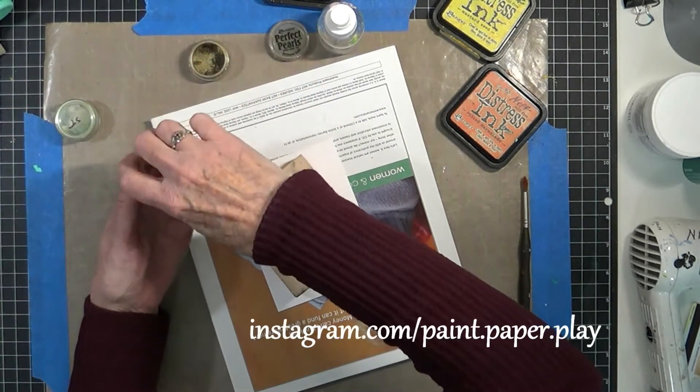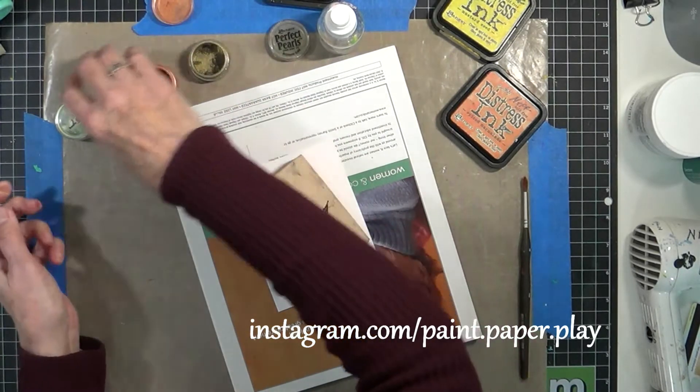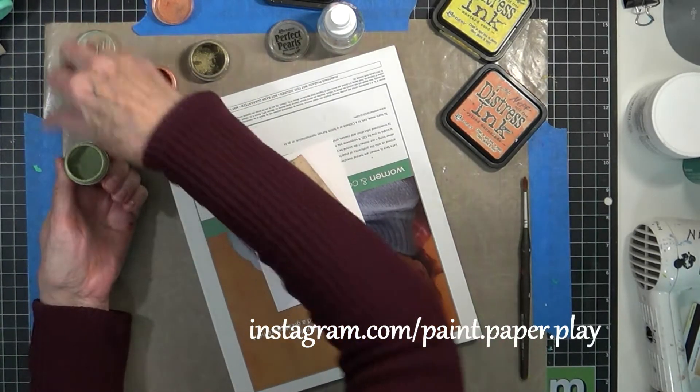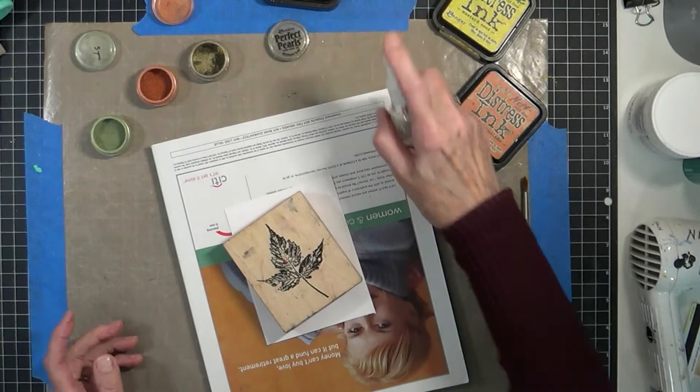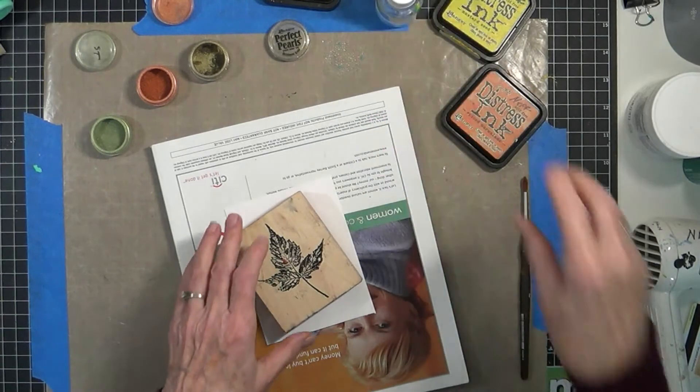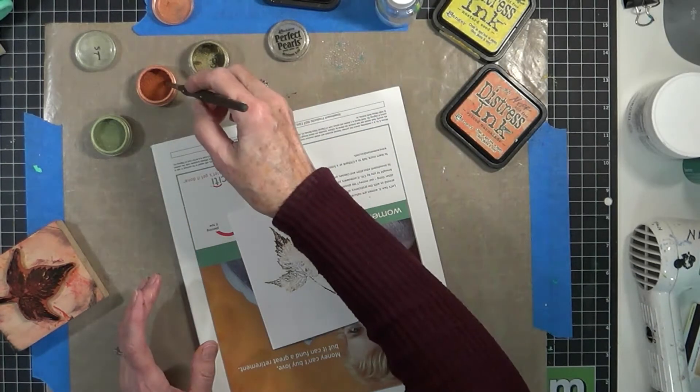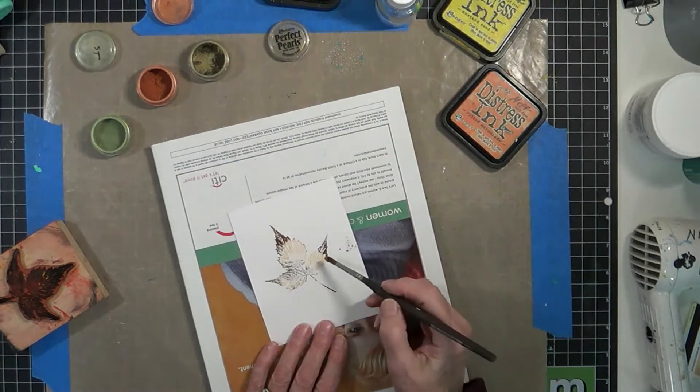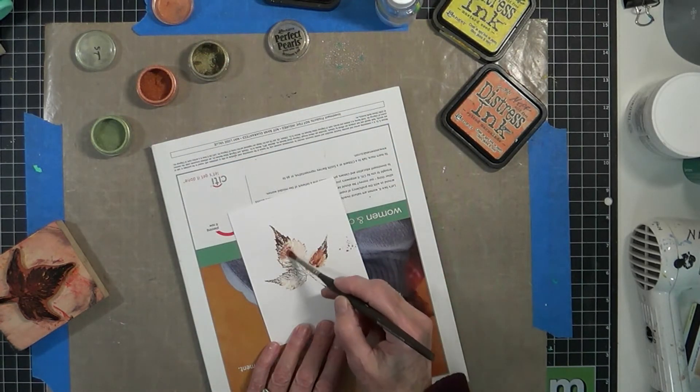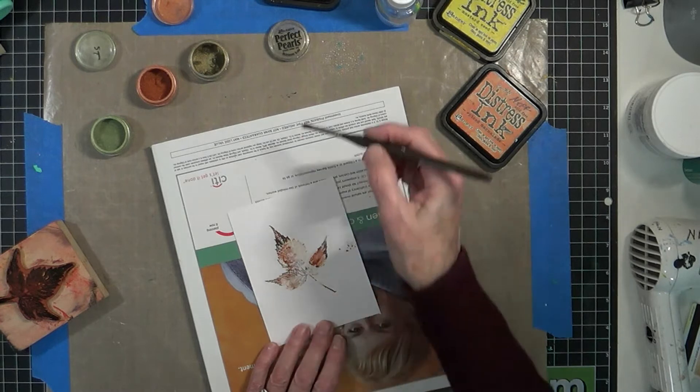And then I'm going to uncap my Perfect Pearls here. The Perfect Pearls will adhere to that damp Distress Ink. So I'm using a dry brush and just pick up a bit of the Perfect Pearls on the tip of your brush and just sort of brush it here and there.